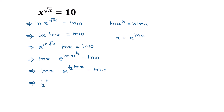...times e to the power of 1/2 times ln of x, equal to 1/2 times ln of 10 on the right side. The 1/2 has been multiplied on both sides.